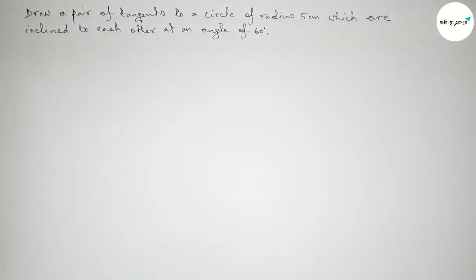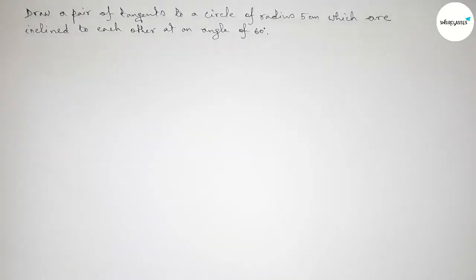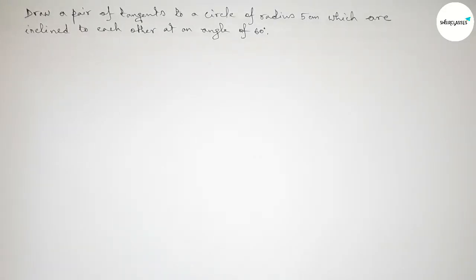Hi everyone, welcome to SI Share Classes. Today we're constructing an important geometrical construction. The question is: draw a pair of tangents to a circle of radius 5 centimeters which are inclined to each other at an angle of 60 degrees. So let's start the video.